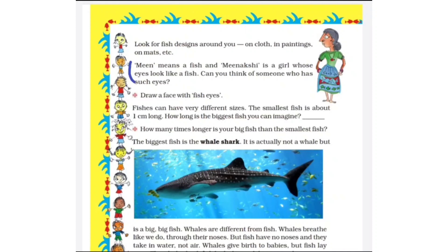Meen means a fish. Meenakshi is a girl whose eyes look like a fish. Can you think of someone who has such eyes? You can try to draw a face with fish eyes.